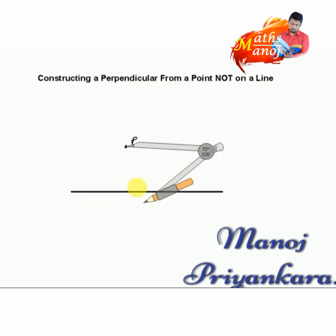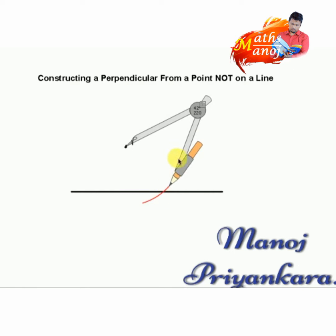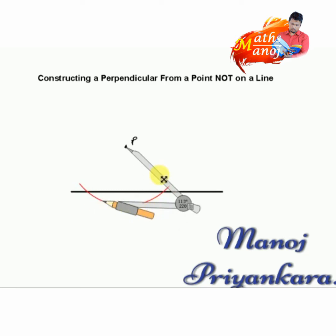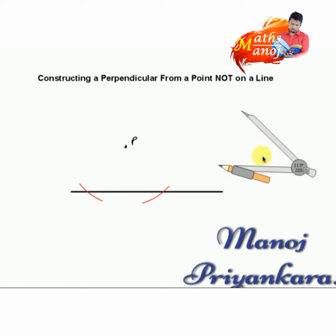We draw an arc to cut the straight line, and in another place we draw another arc — so two arcs can be drawn. At one time we can also draw one arc to cut the straight line in two places. Now we name the intersected points as X and Y.